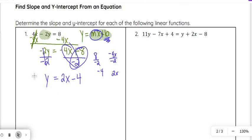Now that we have it in slope-intercept form, which is y = 2x - 4, y = mx + b, we go ahead and we figure out our m, which is our slope, and our b, which is our y-intercept.